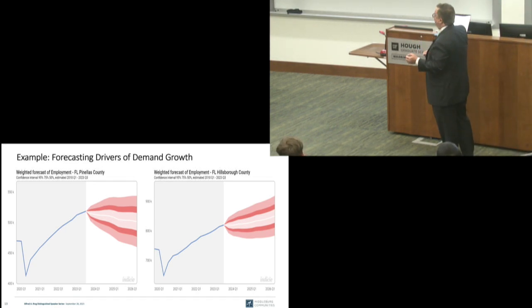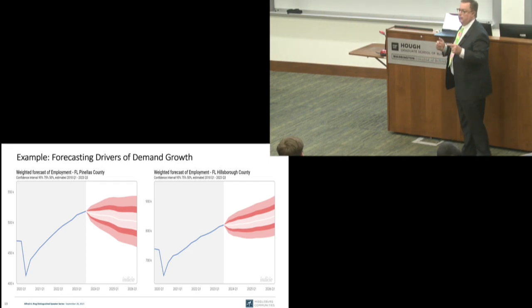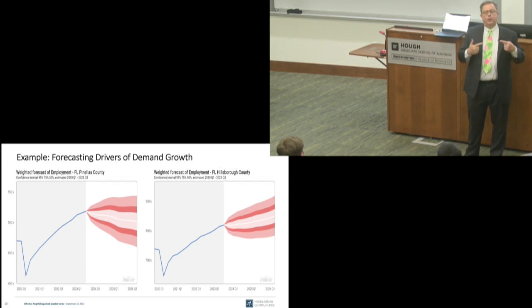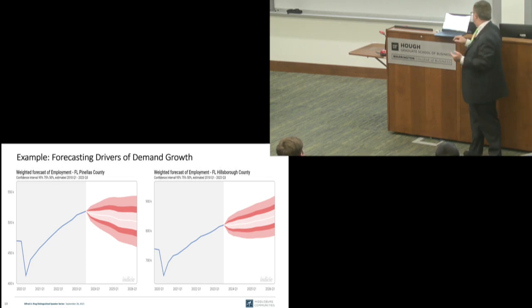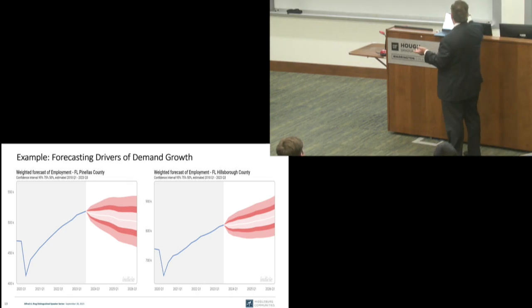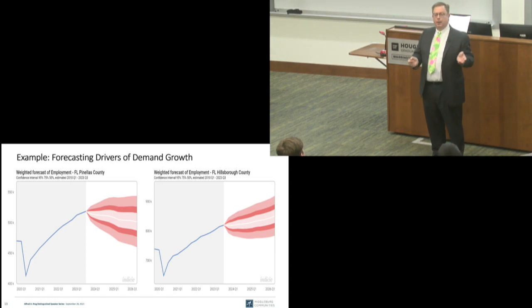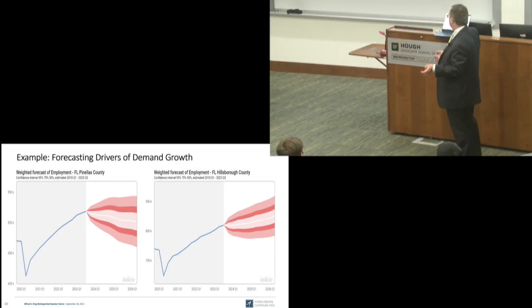My first step is to replace what we're buying from somebody else with something we can do even better. My second step is to get a little more geographically disaggregated. It's not easy to do. I also do forecasts of growth in the young adult population and various other drivers of demand.